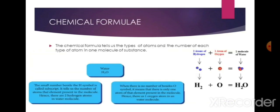A chemical formula is a symbolic representation of one molecule of an element or a compound. It provides information about the elements present in the molecule and the number of atoms of each element. For example, water is H2O, meaning each molecule of water has two hydrogen atoms combined with one oxygen atom. The small number beside a symbol is called a subscript and tells us the number of atoms of that element in the molecule.